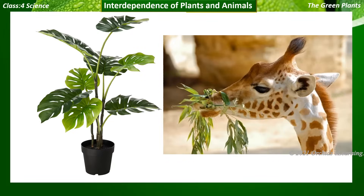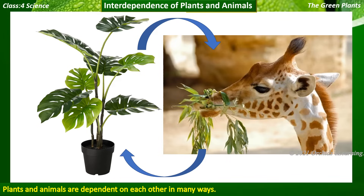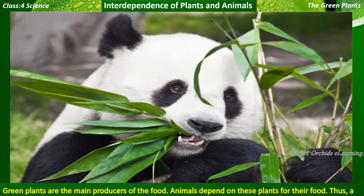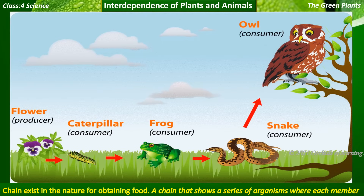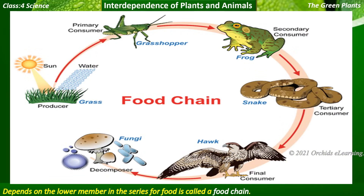The interdependence of plants and animals: plants and animals are dependent on each other in many ways. Green plants are the main producers of food, and animals depend on these plants for their food. Thus a chain exists in nature for obtaining food. A chain that shows a series of organisms where each member depends on the lower member in the series for food is called a food chain.